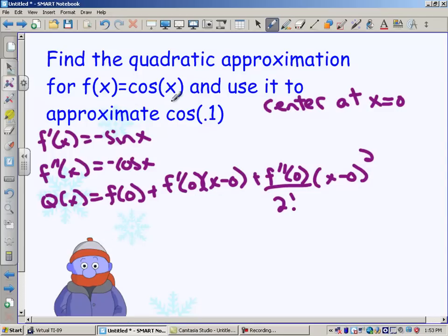All right, well, what's my original function? My original function is cosine of x. So what is the cosine of 0? Well, you should know that that's 1. Now, what about f prime of 0? What is negative sine of 0? That is 0. And then f double prime of 0 would be negative cosine of 0, which would be negative 1.